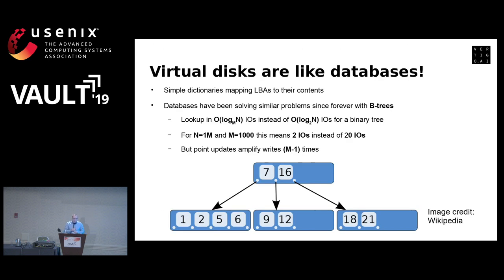We realized that virtual disks are just like databases — simple key-value stores where the keys are your disk LBA offsets and the values are the contents of those sectors. In databases, the traditional solution has always been to use a B-tree. What's nice about a B-tree compared to a binary tree is that with order log-N disk IOs for every access — say a million keys means about 20 IOs — a B-tree compresses that by making nodes wider. With a thousand keys per node, instead of 20 IOs you only do 2, and typically the root node is cached in memory so you only do 1 IO.